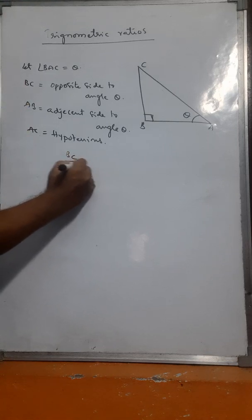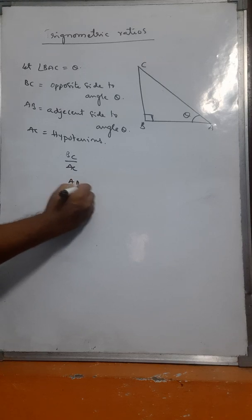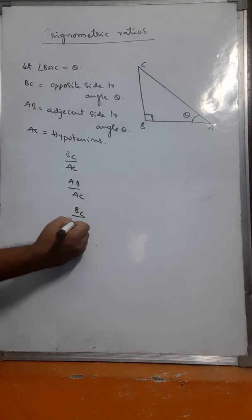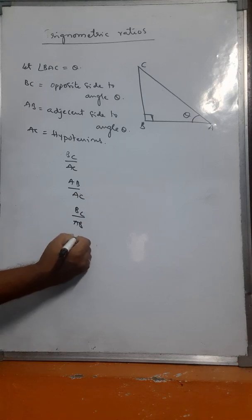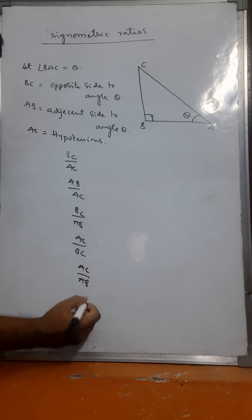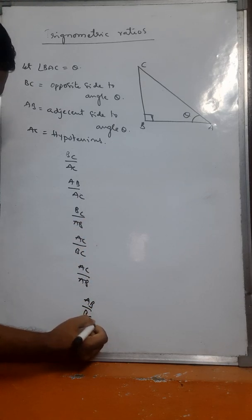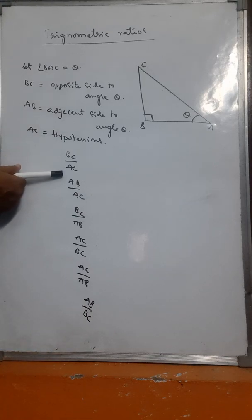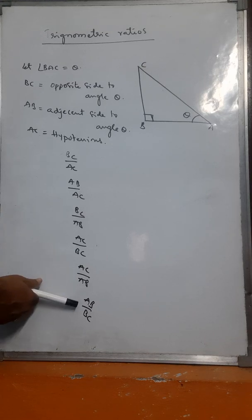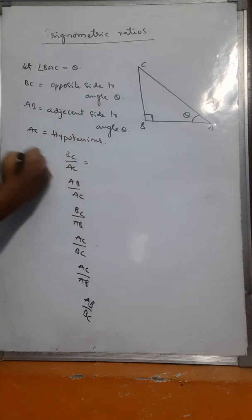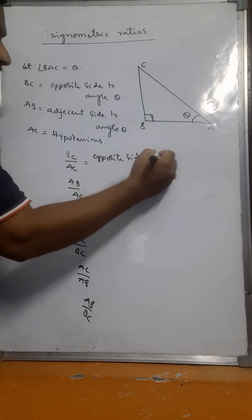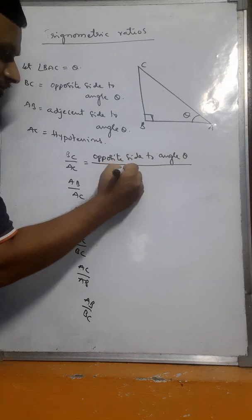We have six ratios: BC by AC, AB by AC, BC by AB, AC by BC, AC by AB, and AB by BC. BC means opposite side to angle theta.